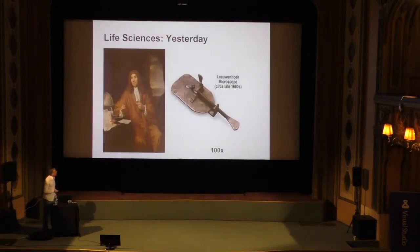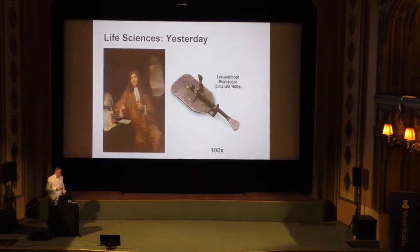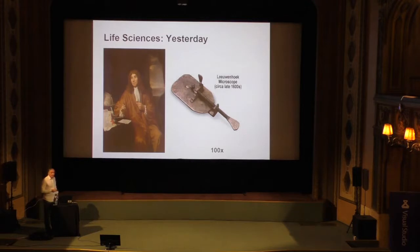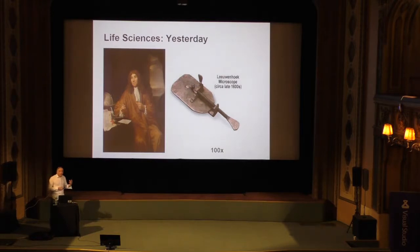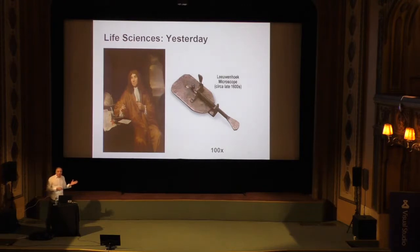So, life sciences — when did they start? You can argue that as a science, they started shortly after the Renaissance, at the same time that Galileo built the first telescope. This gentleman in Holland built the first microscope with a magnification of the hunter. That allowed him to start looking at cells. He looked at sperm in particular — he got in trouble for that. That is another story.